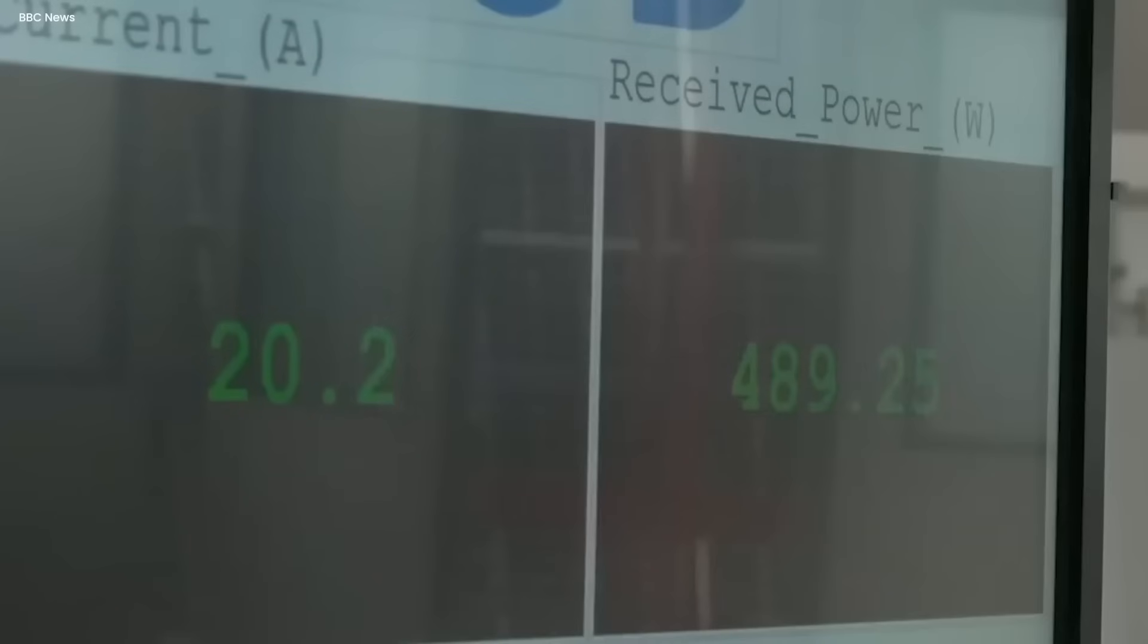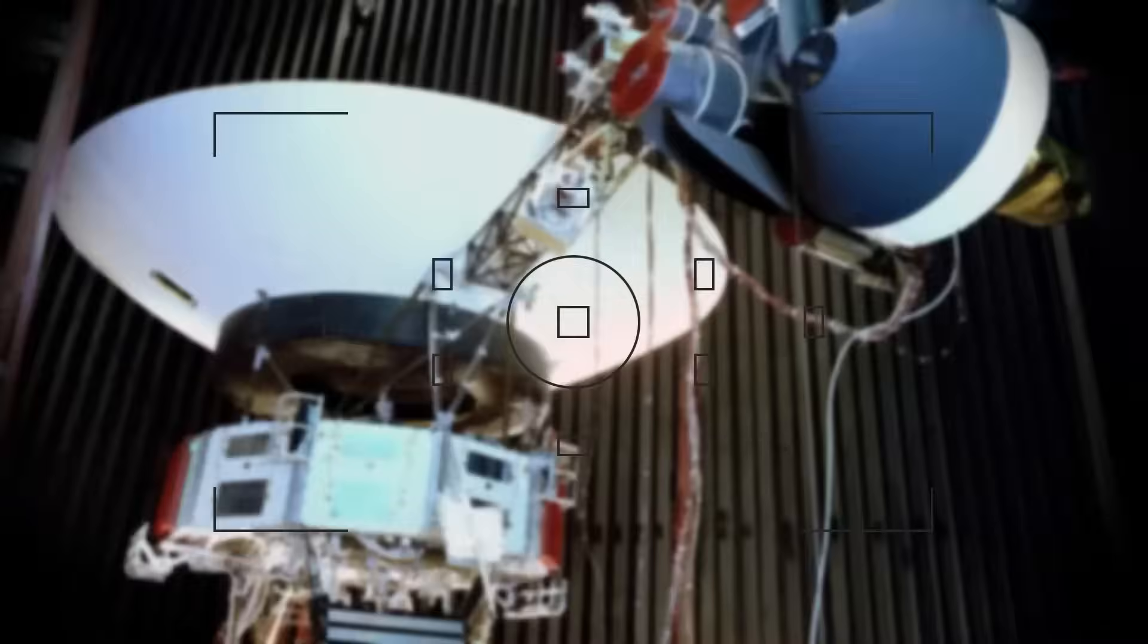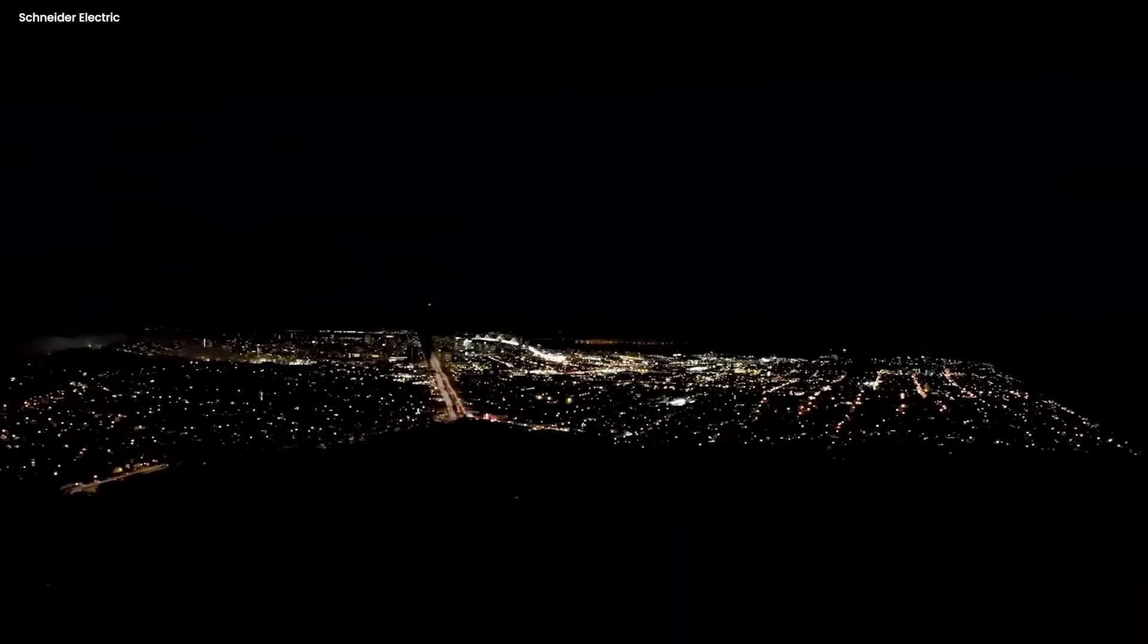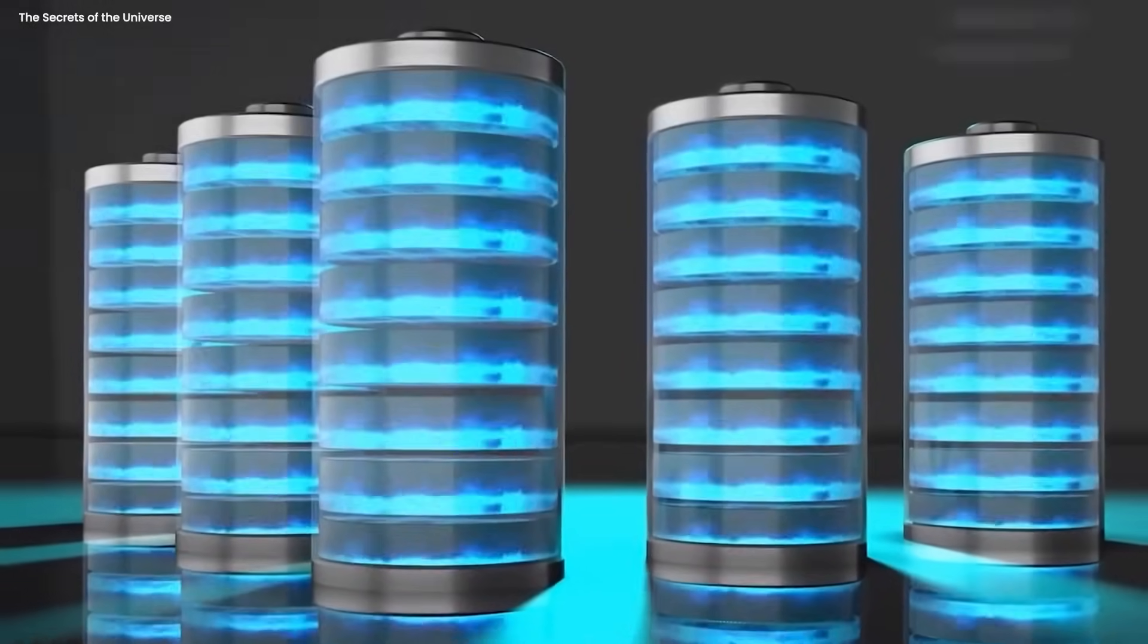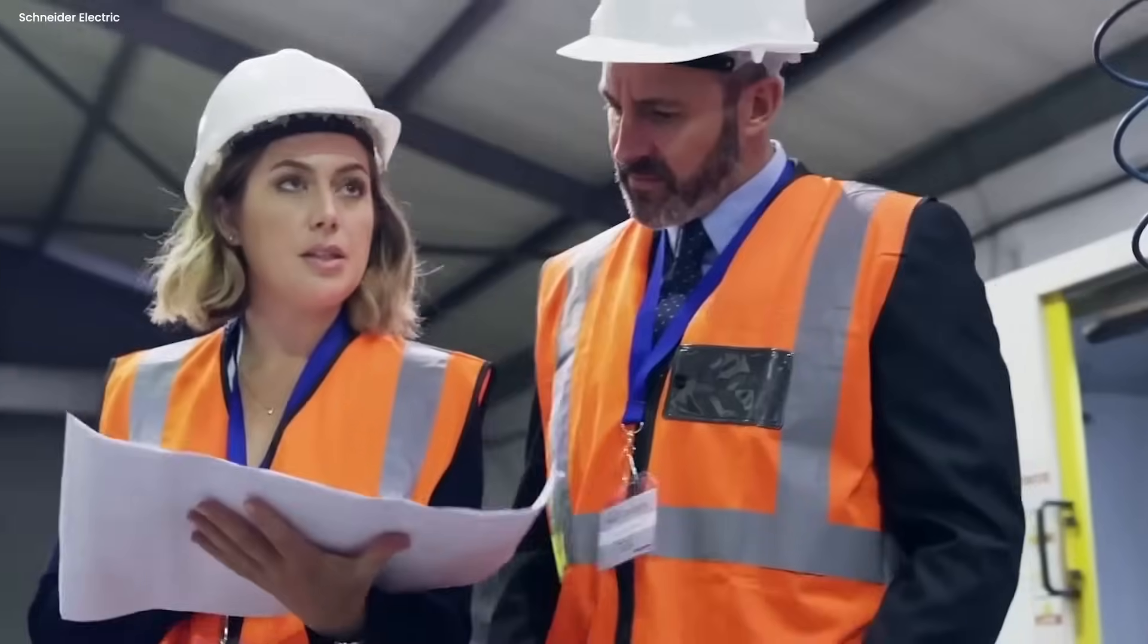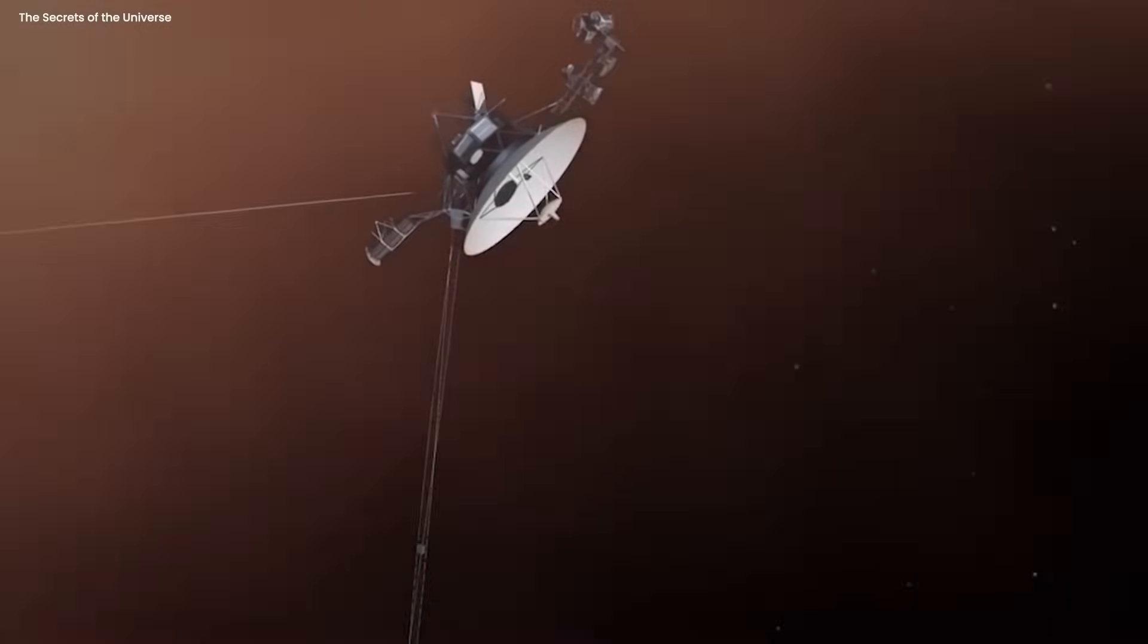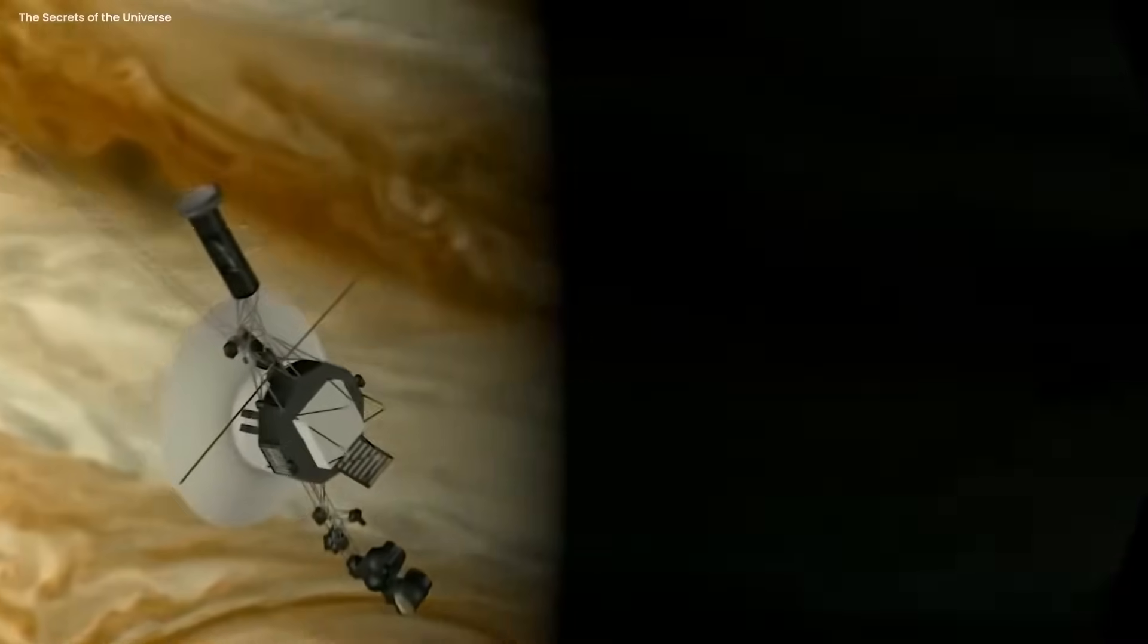Furthermore, ongoing technical advancements and enhancements in power management techniques have enabled engineers to refine and optimize the power systems of the Voyager probes over the years. These improvements encompass more efficient power distribution, enhanced battery charging methods, and advancements in power regulation and control. Through these methodical strategies, engineers have successfully extended the operational lifespan of Voyager 1.